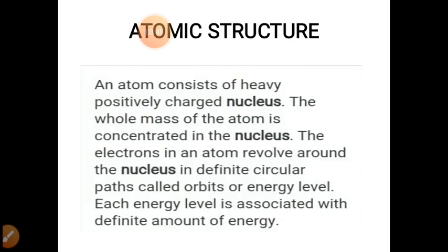Atomic structure. An atom consists of heavy positively charged nucleus. The whole mass of the atom is concentrated in the nucleus. The electrons in an atom revolve around the nucleus in definite circular paths called orbits or energy levels. Each energy level is associated with definite amount of energy.